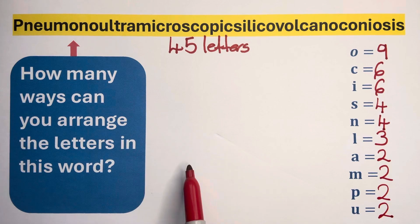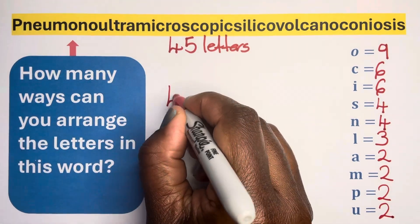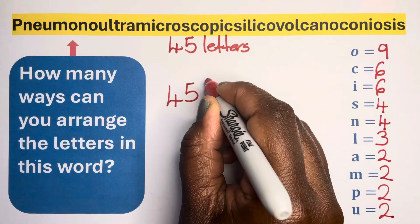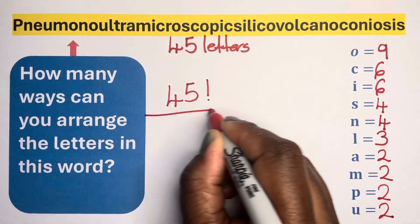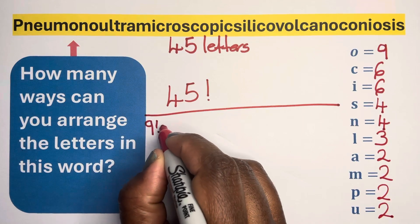So, this is a factorial problem. We need to find 45 factorial and then divide by 9 factorial times...